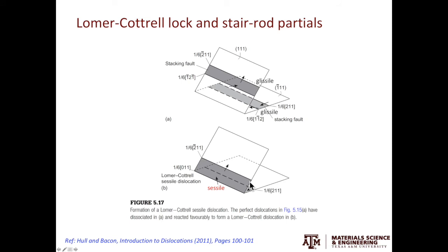Again, there is a special name for this configuration. This is called the Lomer-Cottrell lock. Since the stacking faults around that sessile dislocation looks like the carpet around the stair rod, the partial dislocations are also called the stair rod partials.